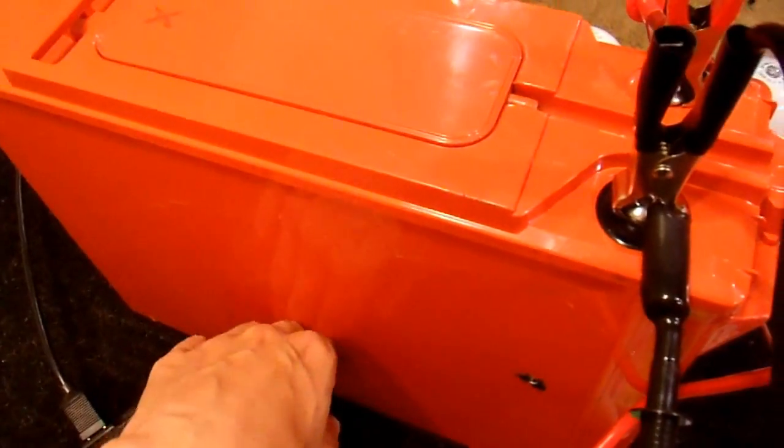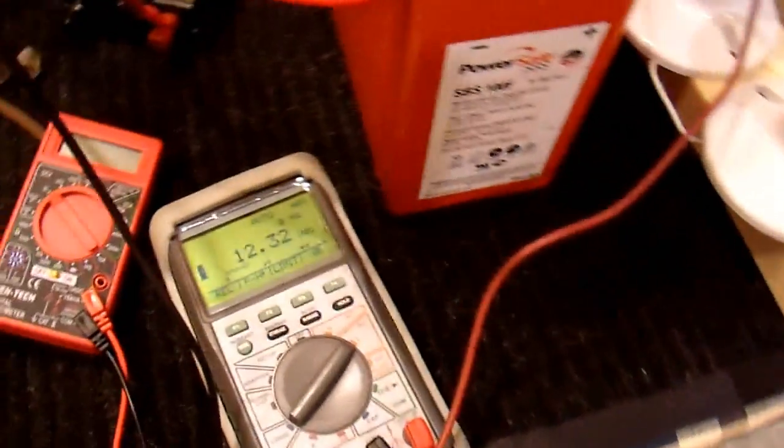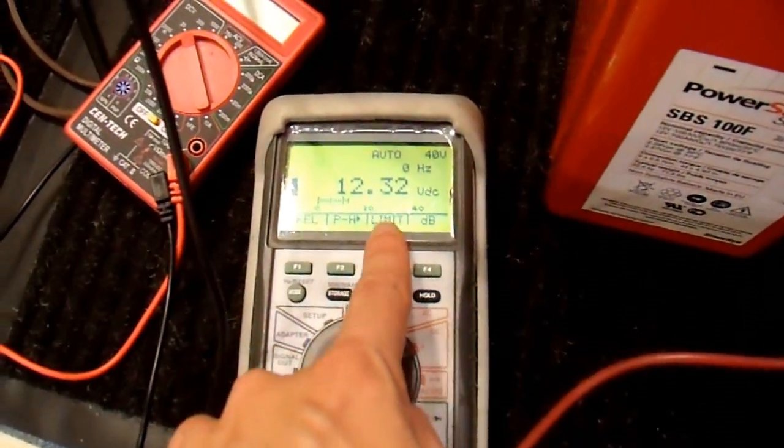So just this one cell, the one that had the biggest issue before, still has an issue. Its internal resistance is too high. And if you take a look at my voltmeter you can directly see that the resistance of that cell is too high.